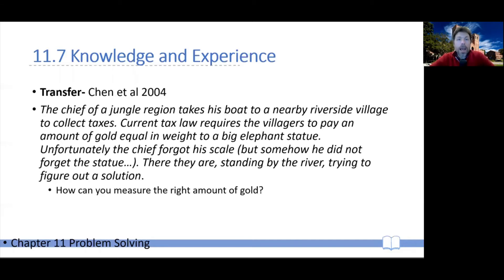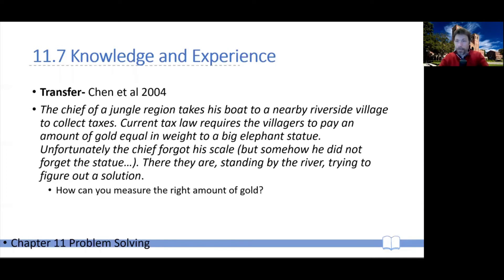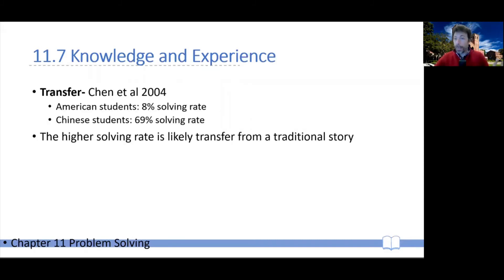The problem: the chief of a jungle region takes his boat to a nearby riverside village to collect taxes. A current tax law requires the villagers to pay an amount of gold equal in weight to a big elephant statue. Unfortunately, the chief forgot his scale that day, so he cannot tell how heavy the statue is — but he does have the statue with him. Standing by the river, they must find a way to take from the villagers the amount of gold equal to the weight of the statue. Can you find a way to measure the right amount of gold? American students typically had only about an 8% solving rate, while Chinese students had a 69% solving rate.